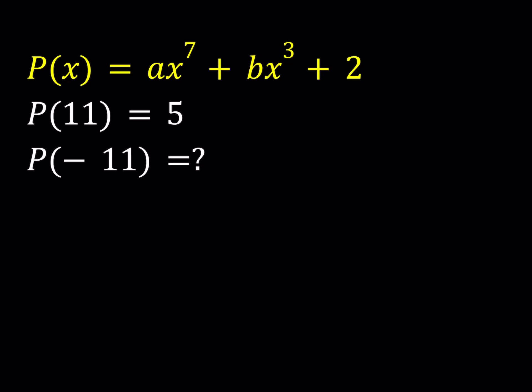So let's take a look. With polynomials, substitution is always a standard method. So we're going to start by replacing X with 11 here. So if you replace X with 11 on both sides you get A times 11 to the 7th power plus B times 11 to the 3rd power plus 2. And we're given that P of 11 is equal to 5.